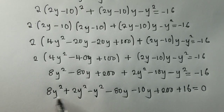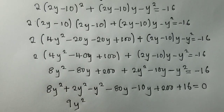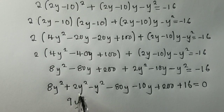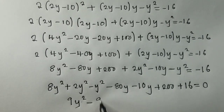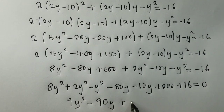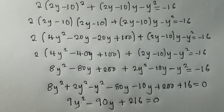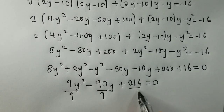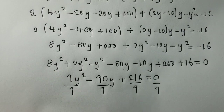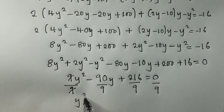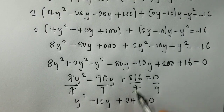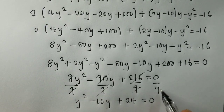So here we can clean up. 8Y² plus 2Y² gives us 10Y², minus Y² gives us 9Y². Negative 80Y minus 10Y gives us negative 90Y. And 200 plus 16 gives us 216, equal to 0. So now we can reduce the numbers — we divide by 9 throughout. We remain with Y² minus 10Y plus 24 is equal to 0.